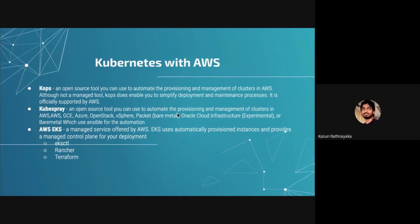If you have bare metal, you can also use Kube-spray. The third option is AWS EKS, which is the managed service in AWS. If you're working with large production environments you may know about this. EKS still has some limitations, but they are growing. They have different tools like EKS CTL, which is also growing. If you want to use a third-party tool like Rancher and have more budget for enterprise products, you can use that too.